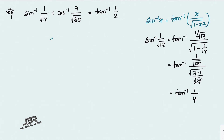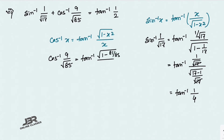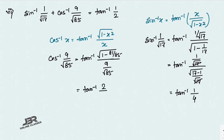For the cos⁻¹ term, use: cos⁻¹(x) = tan⁻¹(√(1−x²)/x). Applying to cos⁻¹(9/√85): tan⁻¹(√(1 − 81/85) / (9/√85)) = tan⁻¹(√(4/85) / (9/√85)). The √85 cancels, giving tan⁻¹(2/9).